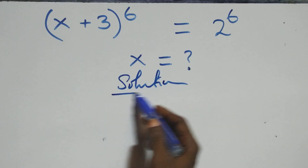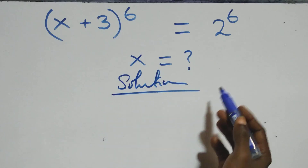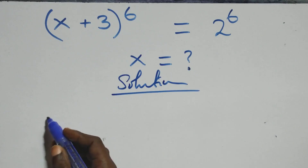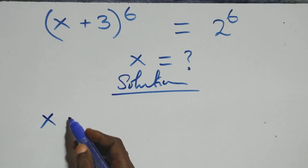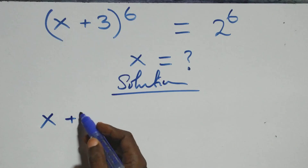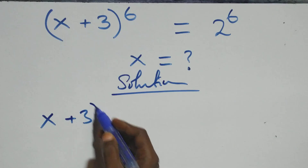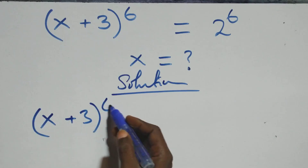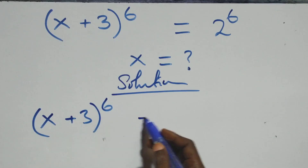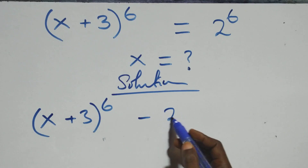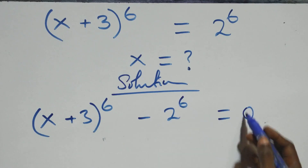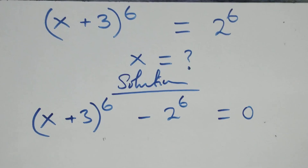And what we have here: we take 2 raised to the power 6 to the left-hand side. That is here, this becomes x plus 3, all raised to the power 6, minus 2 raised to the power 6, then equals to 0 from here.